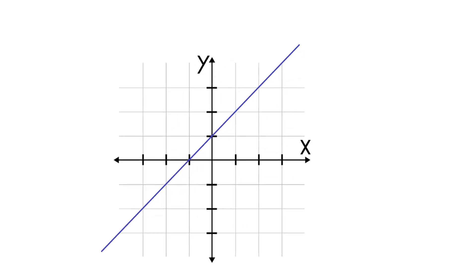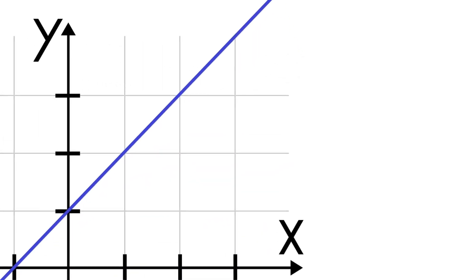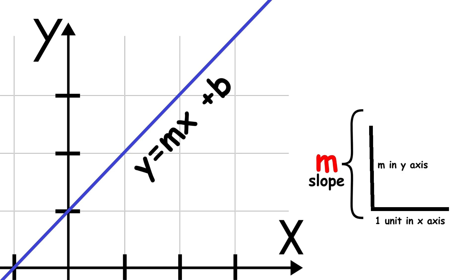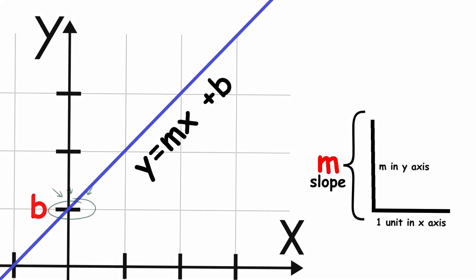A linear graph is a line-shaped graph that can be written as y equals mx plus b. m is the slope: for every one unit you go to the right, you rise by m units. b represents the y-coordinate of the y-intercept, which is the point where the graph crosses the y-axis.